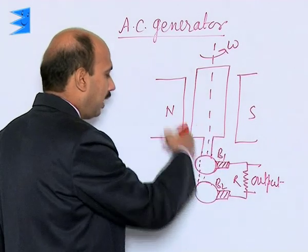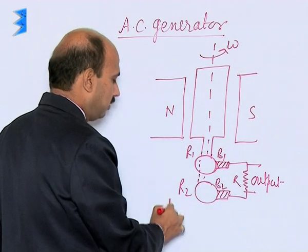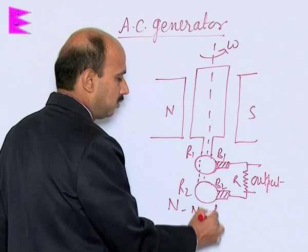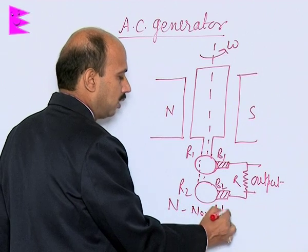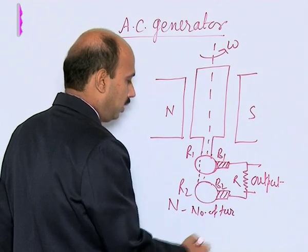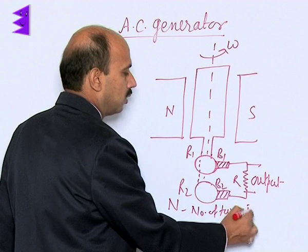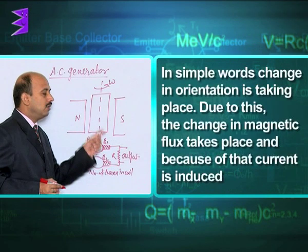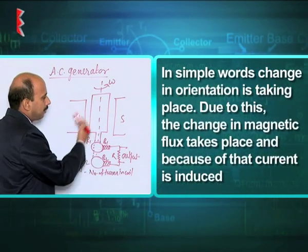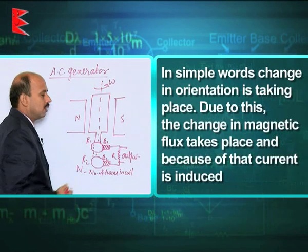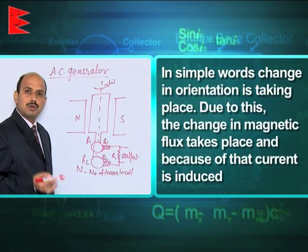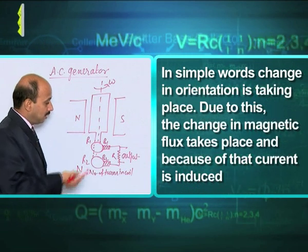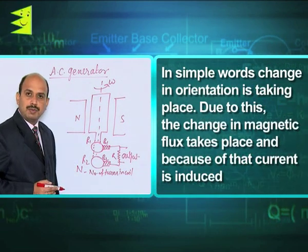This coil has N number of turns, where N is the number of turns in the rectangular coil. When this coil is rotated between the poles of the magnet, the angle between the area vector of the coil and the magnetic field keeps on changing, and as a result, change in magnetic flux takes place.